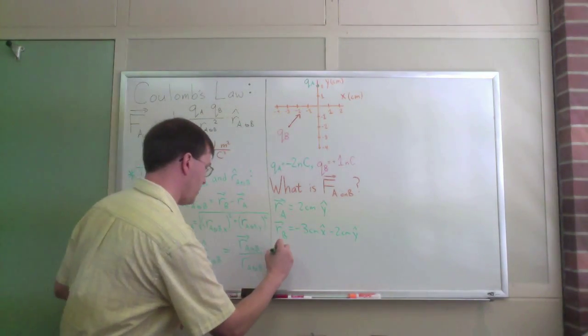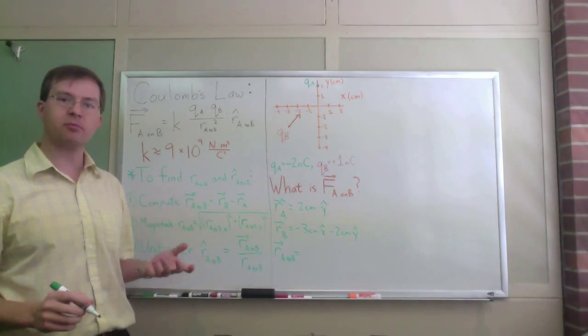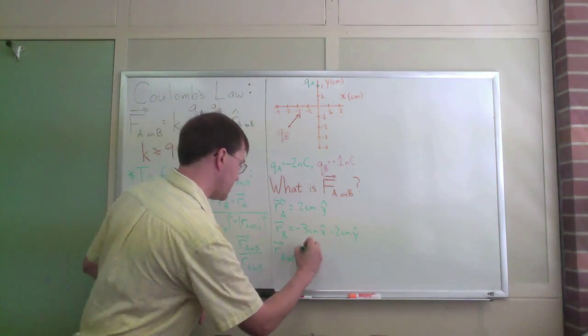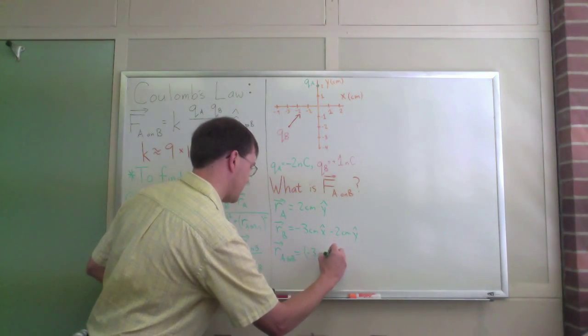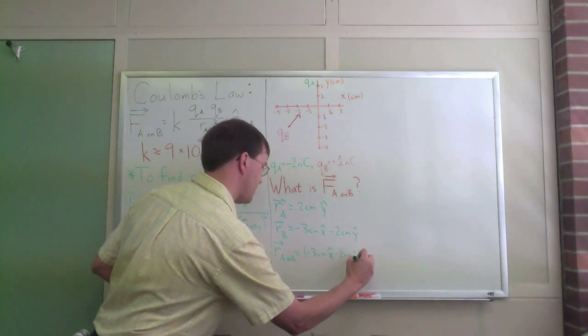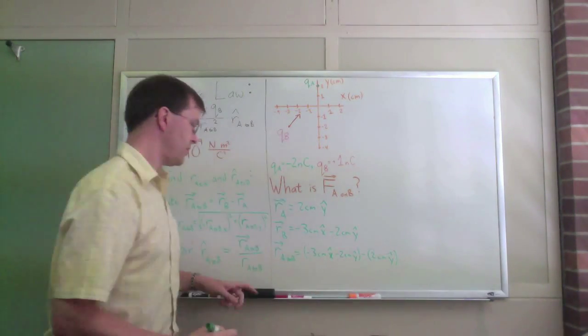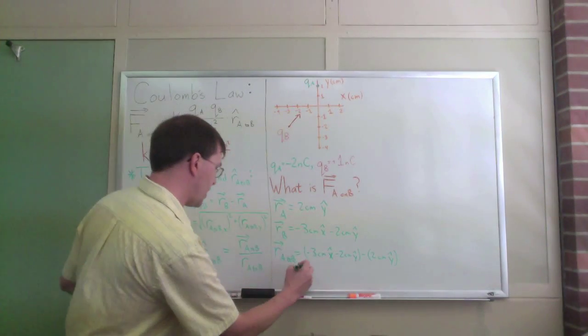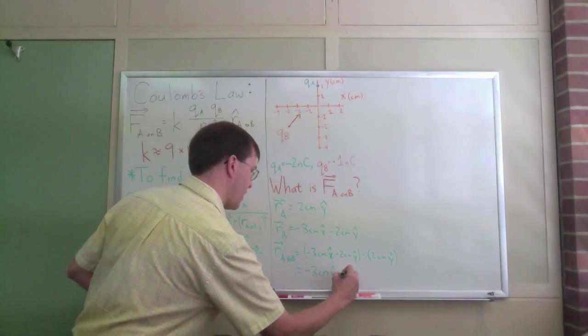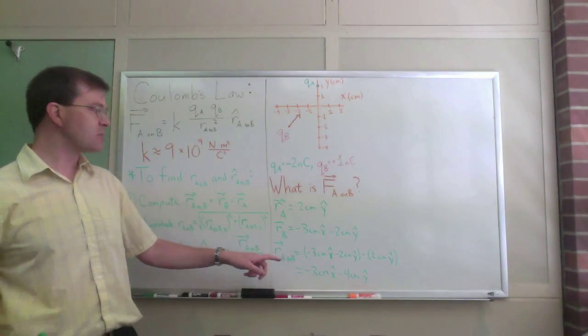That's my position vector in this coordinate system of charge B. So if I want to know r from A to B, the total vector distance, or displacement between A and B, that is r b minus r a, so it's minus 3 centimeters x hat, that's an x, minus 2 centimeters y hat, minus 2 centimeters y hat. Just take the difference of the two vectors. And in the end, what I come up with is minus 3 centimeters x hat, minus 4 centimeters y hat. That's my displacement vector from A to B.